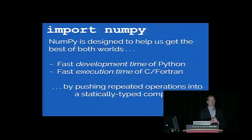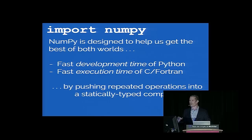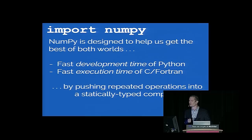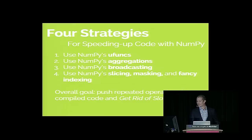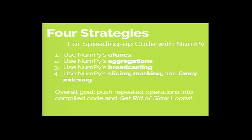This is where NumPy comes in. NumPy is designed to help us get the best of both worlds — we want fast code development time of Python but fast code execution time of a language like C or Fortran. NumPy recognizes that the slow parts are when you're looping over small operations, so it pushes those looped operations down into compiled code. In compiled code, the type check only has to happen one time for an entire loop of a million repetitions. I want to talk about four strategies for speeding up code with NumPy, and the title of this talk is 'Losing Your Loops.'